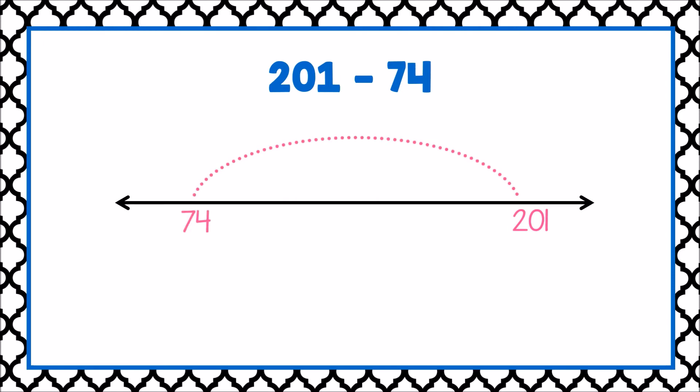Let's take a look at another example, 201 minus 74. This problem is asking me to find the difference between 201 and 74. This problem is tricky because of the need to regroup. I can adjust one number in my problem,